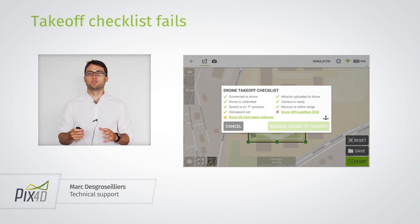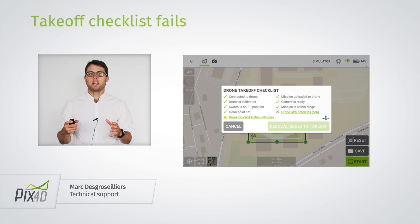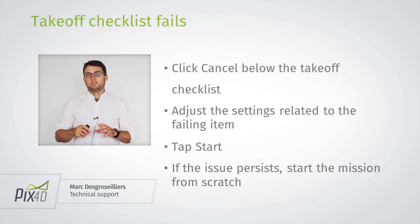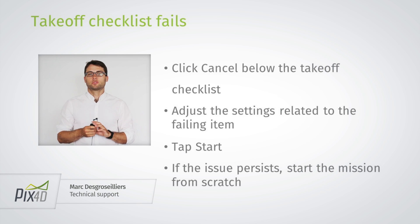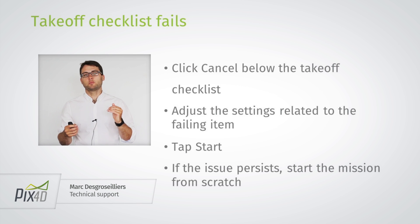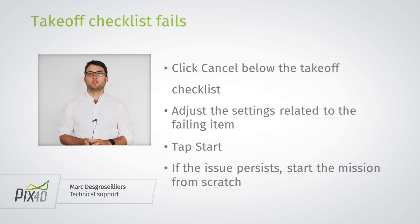Now, I want to go over a few common situations and explain how to solve these issues. The first one is that there's a red cross on the take-off checklist. This take-off checklist is some kind of automated troubleshooting, so it will tell you which item you should investigate. We also have an in-depth article on our support website that will tell you, for each item, how to turn it from a red cross to a green check mark. Once everything is green, you can start the mission.